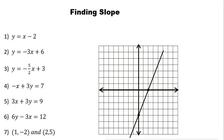Finding the slope of a line: the slope represents the direction of a line on the coordinate plane. A coordinate plane contains two perpendicular number lines. The horizontal one is called X and the vertical one is called Y. The intersection of these two axes is called the origin. An ordered pair (X, Y) shows the location of each point — for example, the origin is at (0, 0).